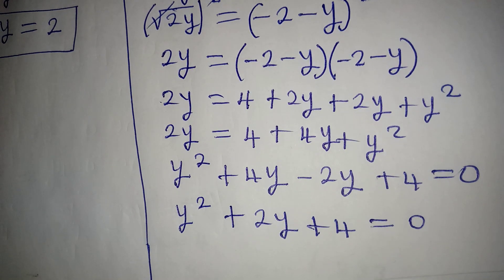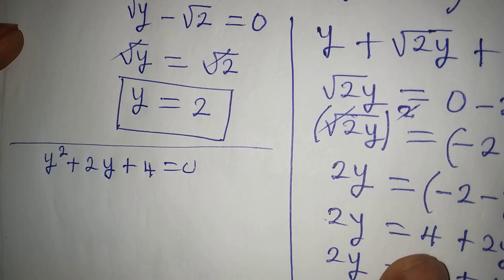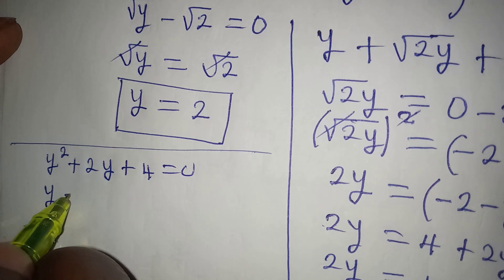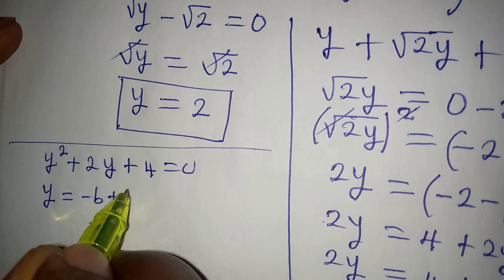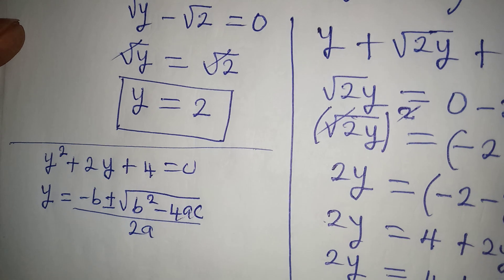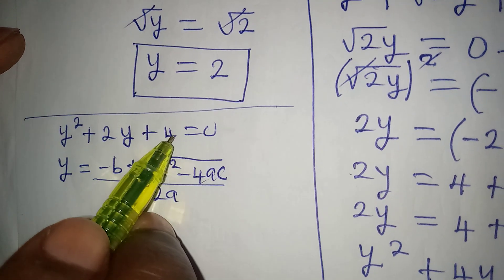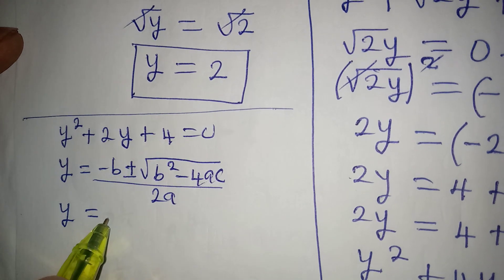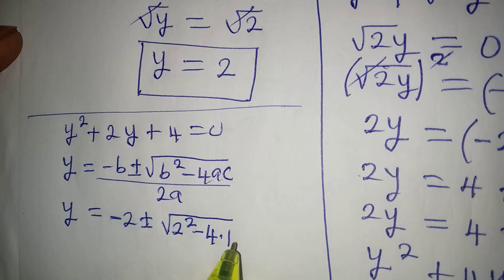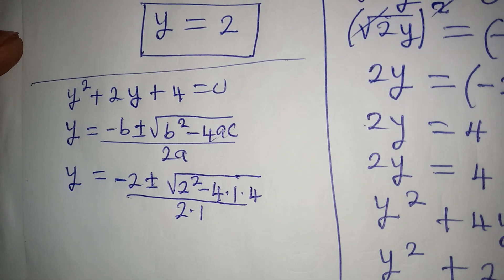We now have a quadratic equation: y squared plus 2y plus 4 equals 0. We can solve this using the quadratic formula: y equals minus b plus or minus square root of b squared minus 4ac, all over 2a. Here, a equals 1, b equals 2, and c equals 4. So y equals minus 2 plus or minus square root of 2 squared minus 4 times 1 times 4, all over 2 times 1.